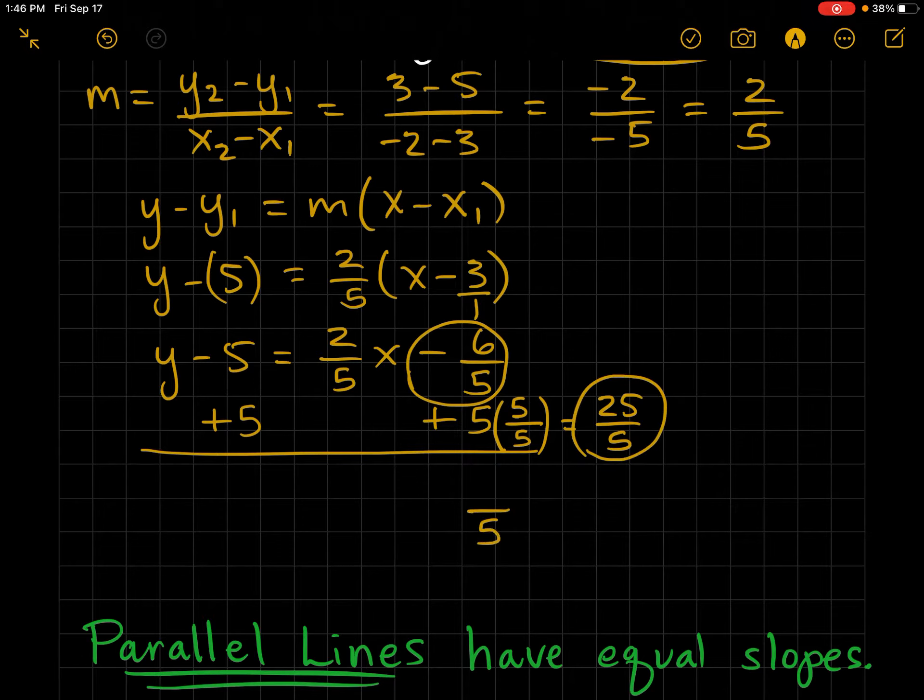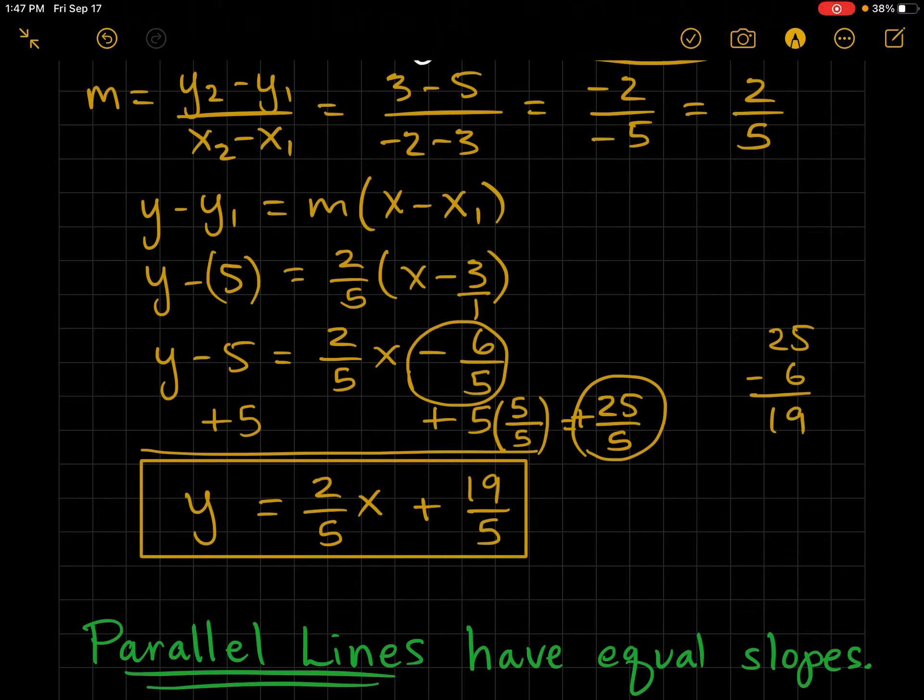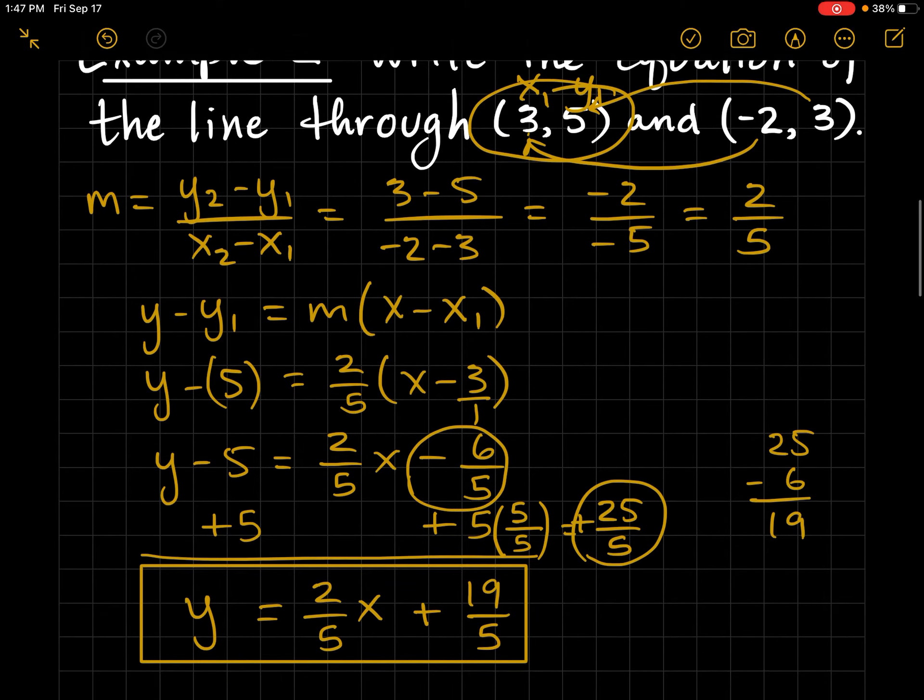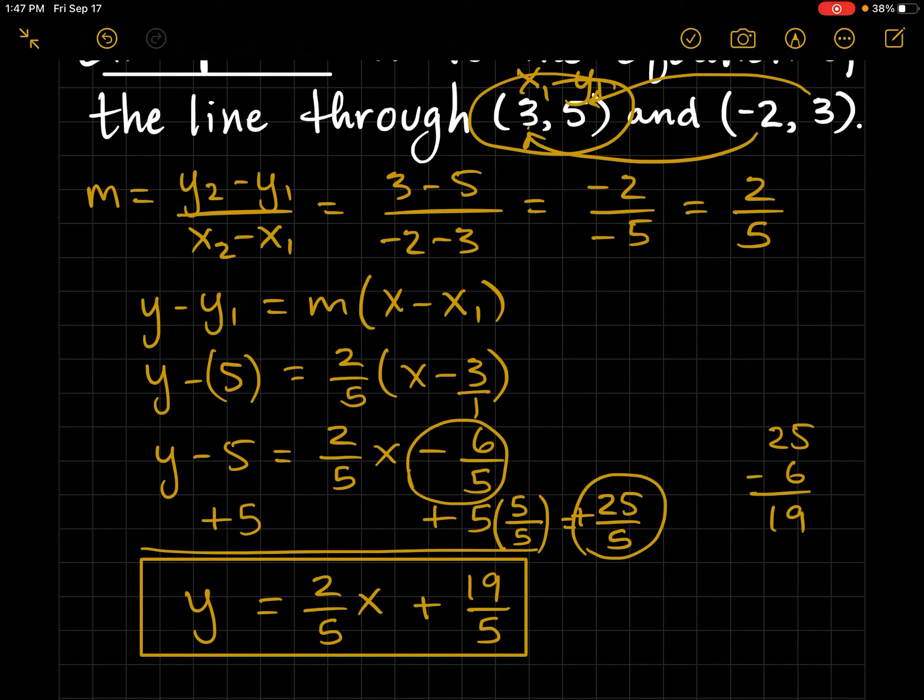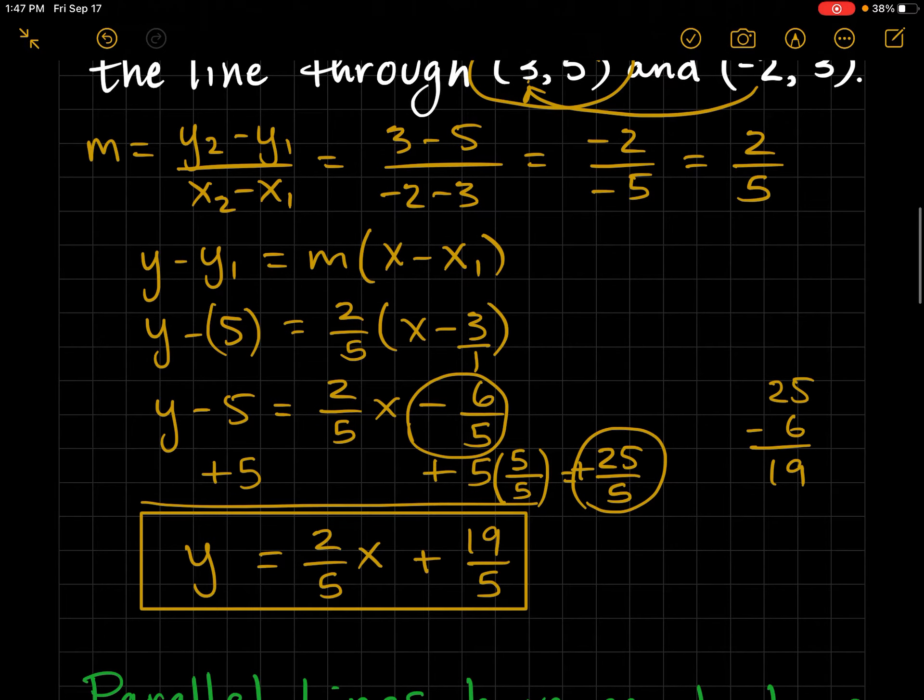Remember, when you add or subtract, you have to have a common denominator. So 25 minus 6 is 19. So that's 19 fifths. And that is the larger number was positive. So my answer is positive. Just a quick review on adding and subtracting fractions. So that's the equation of the line that passes through those two points. If I were on a test, I would actually graph it and kind of see if that line goes through there. That intercept would be approximately, let's see, that would go in 3 and 4 fifths. So that's almost 4. And you can kind of estimate up 2 over 5. And you could see if you actually pass through those two points.